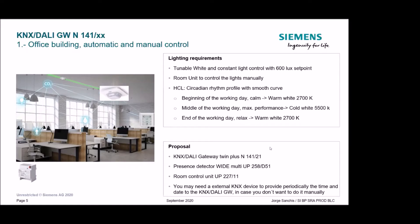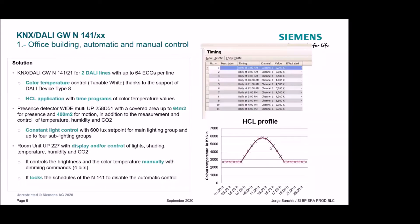For this solution we need a KNX-DALI Gateway — we can use the Twin Plus, the plus version with all functions. It requires a KNX presence detector, so we can use the Siemens presence detector white, and a room unit. If you want accurate time, you can use a KNX visualization or weather station to provide time and date periodically to the KNX-DALI gateway. The solution uses the KNX-DALI gateway 21, which has two channels and all functions, and supports color temperature and tunable white via DALI device type 8.